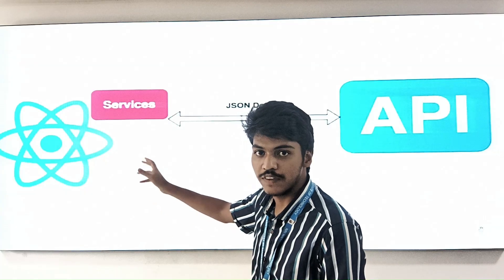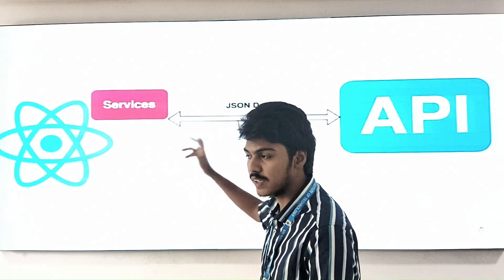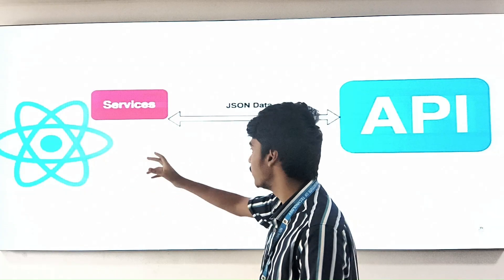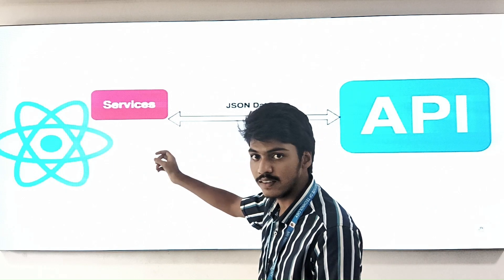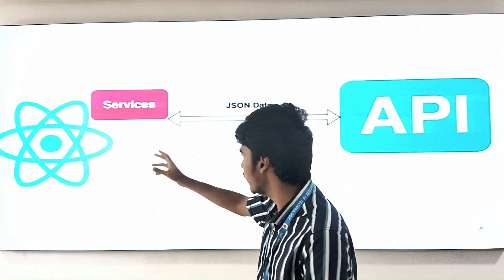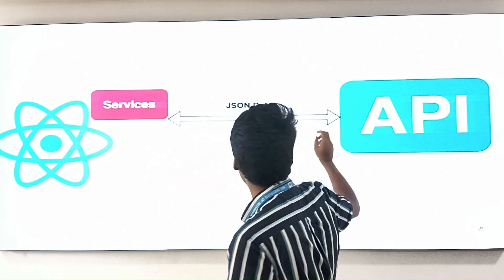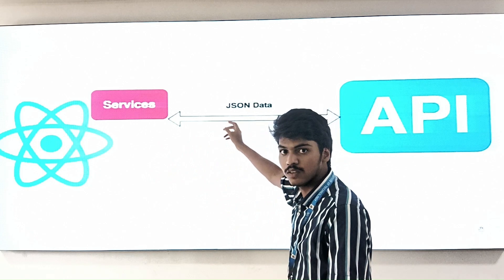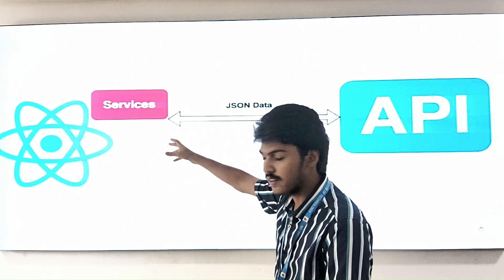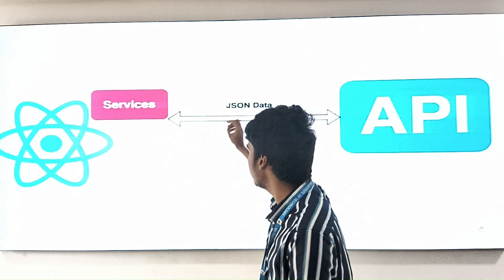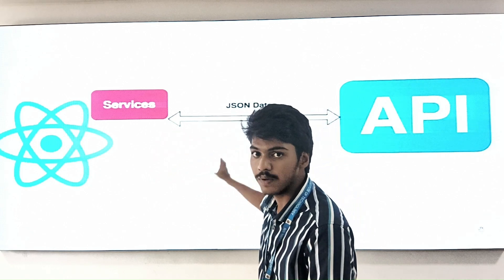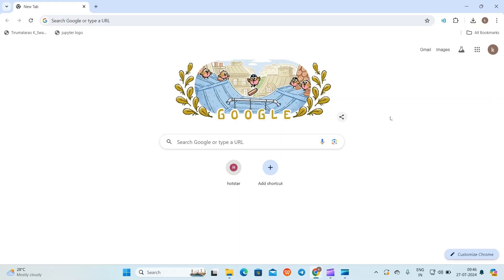As we discussed about React and API, now let's discuss about integration of API using React.js. Here we use the fetch service to fetch the data from React.js. Now let's see the process.